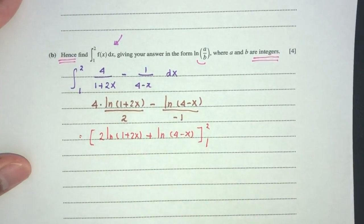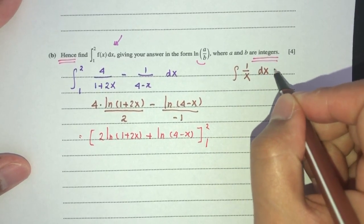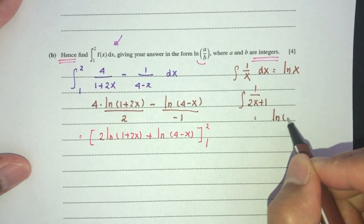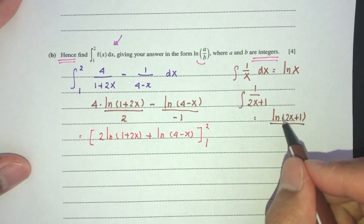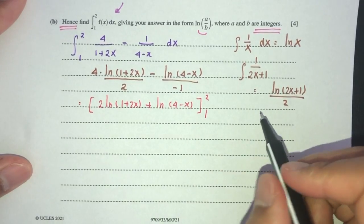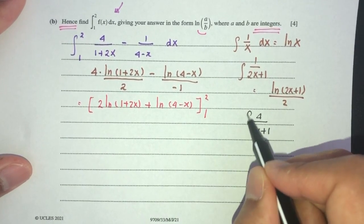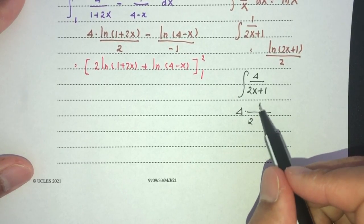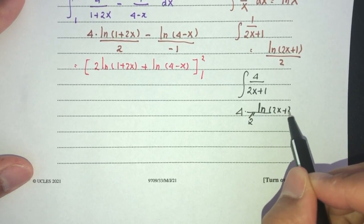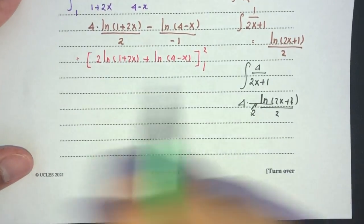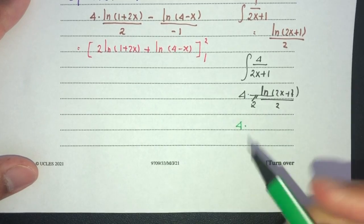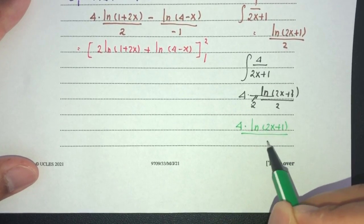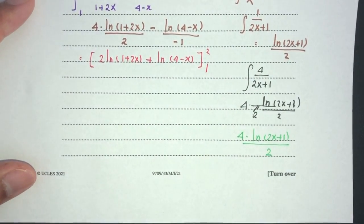When integrating a linear expression in the denominator, we take ln of the value and divide by the derivative of the denominator. So ∫4/(1+2x)dx = 4·ln|1+2x|/2 = 2·ln|1+2x|, and ∫1/(4−x)dx = ln|4−x|/(−1) = −ln|4−x|, making the second term +ln|4−x| after the minus sign.